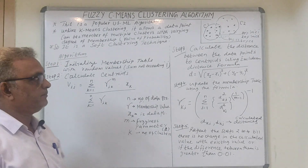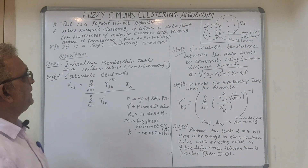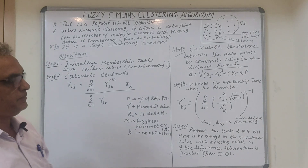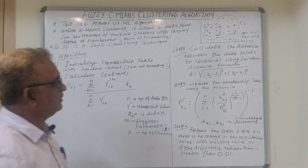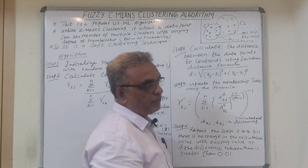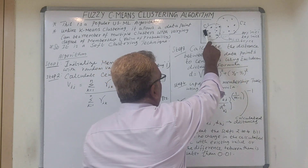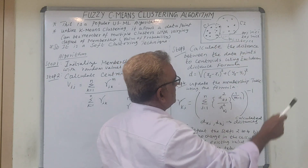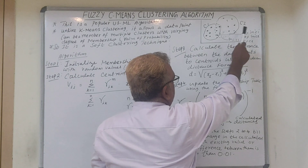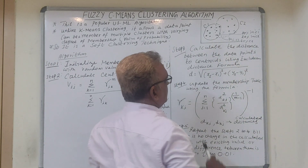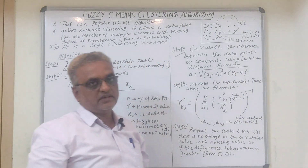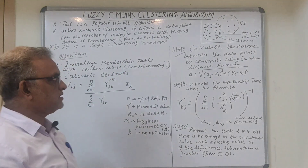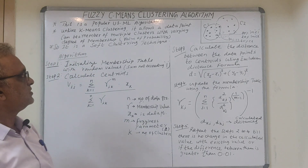Unlike K-means clustering, Fuzzy C-means allows a data point to be a member of multiple clusters with varying degrees of membership values — essentially probabilities. For example, some points may be 80% inside cluster C1 and 20% inside C2, while others may be 40% inside C1 and 60% inside C2. This kind of probability is incorporated in this algorithm, making it a soft clustering technique.